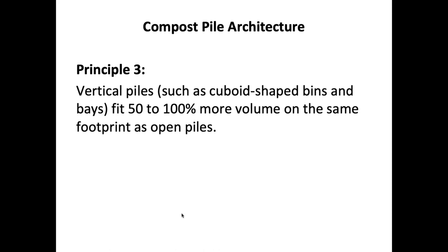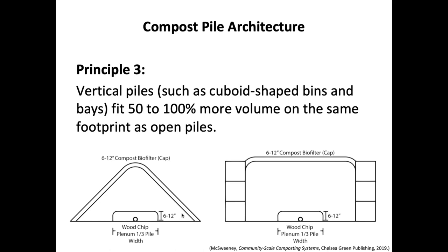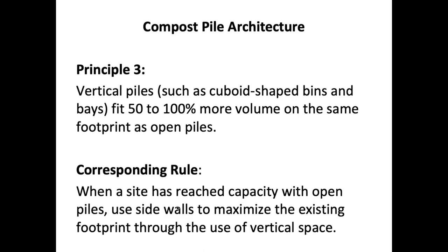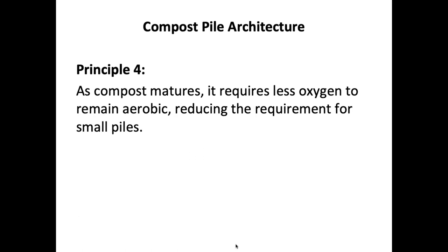Principle three: vertical piles such as cuboid or bay piles fit 50 to 100% more volume in the same footprint as open piles — you can see how twice as much material fits into the same footprint just by adding walls. The corresponding rule: when a site has reached capacity with open piles, use side walls to maximize the existing footprint through the use of vertical space.